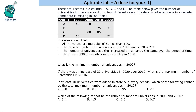Hello everyone, welcome to Aptitude Jab. This is a data table — it says that there are four states in a country: A, B, C, and D. The table gives the number of universities in these states during four different years. The data is collected once in a decade: the years are 1990, 2000, 2010, and 2020. Some information is missing from the table.